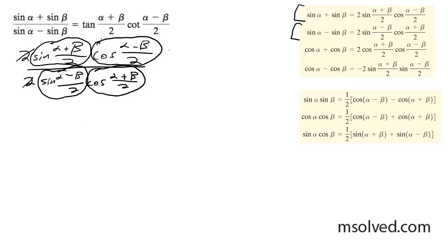As a result, when you match and line those up, you simply get tangent (α+β)/2 and cotangent (α-β)/2. I'll write this out so you can see it.